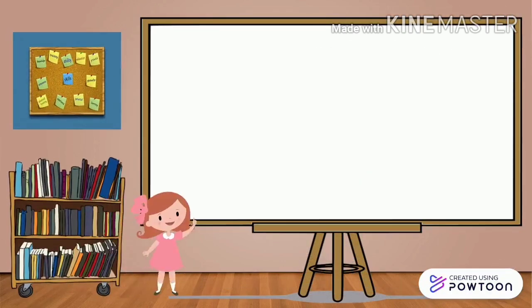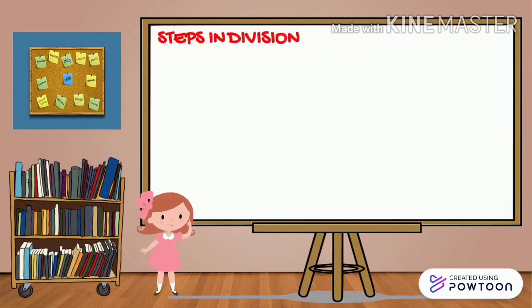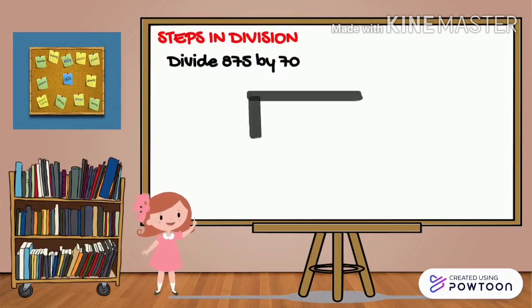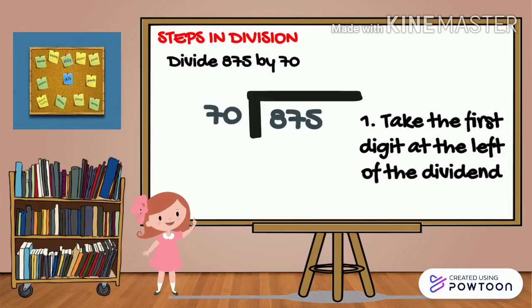Okay, so let's now discuss the steps in division. Let's say we're going to divide 875 by 70. 875 divided by 70, so the first step is to take the first digit at the left of the dividend. So the first digit here is 8.